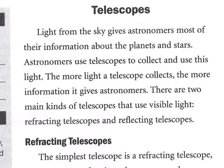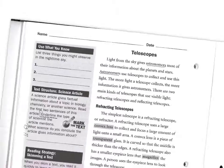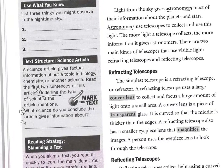Telescopes. Light from the sky gives astronomers most of their information about the planets and stars. Astronomers use telescopes to collect and use this light. So, what are you underlining? Astronomers. What science do you conclude the article gives information about? Astronomers study what type of science? Astronomy. So that's what you will write here — astronomy.